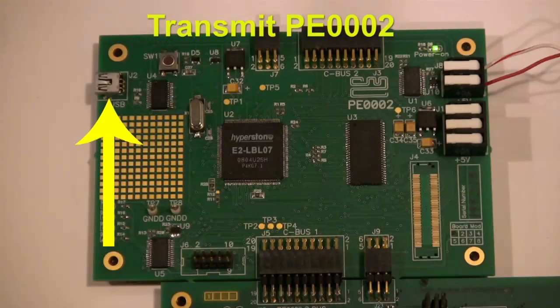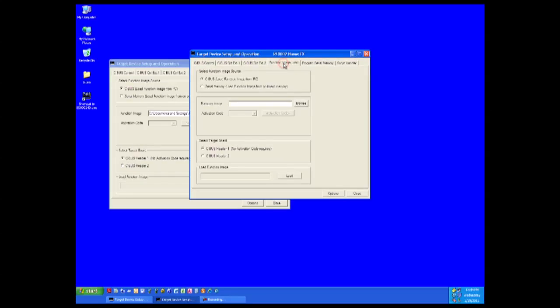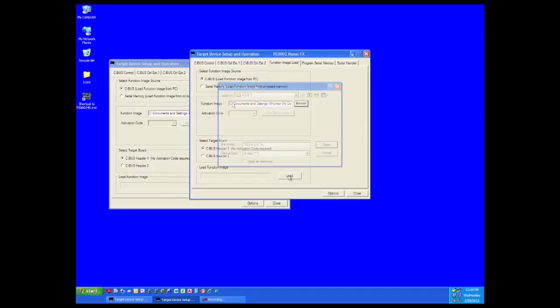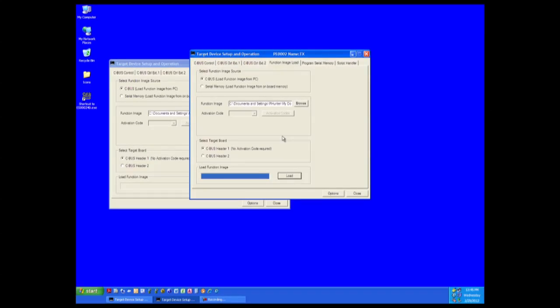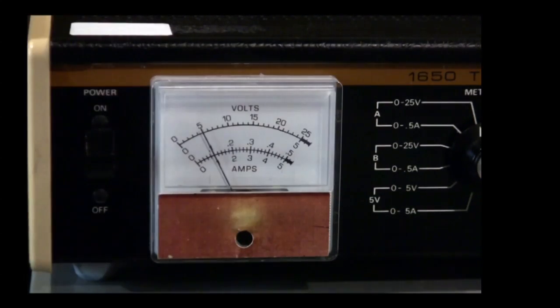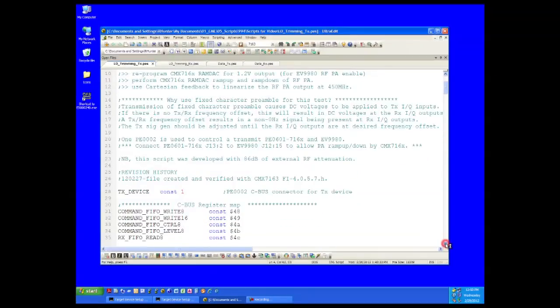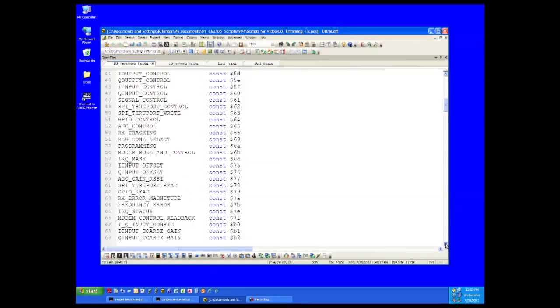Now to the transmit side. Connect the transmit PE0002 to your computer with a USB cable. Launch a GUI for the transmit PE0002 and load the function image into the transmit PE0006-01. We are almost ready to run a script. So turn on the minus 5 volts for the transmit baseband SMA interface. Let's talk about script files for a minute. The PE0002 can use script files to automate evaluation board configuration. You can open and edit these script files in any text editor. These scripts illustrate how to configure the CML devices and can be a great starting point for your own software development.